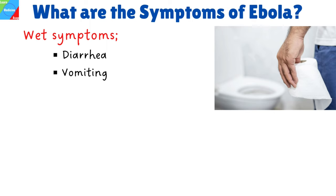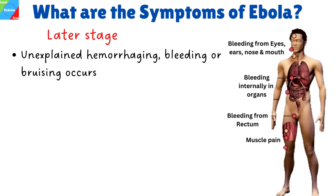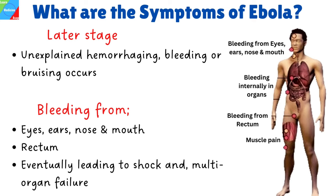This is followed by wet symptoms such as diarrhea and vomiting. Other symptoms are loss of appetite, abdominal pains, red eyes, skin rash, hiccups, chest pains, and difficulty breathing and swallowing. At a later stage, unexplained hemorrhaging, bleeding, or bruising occurs. This usually causes bleeding from all body orifices, including bleeding from eyes, ears, nose, and mouth, bleeding from the rectum, and eventually leading to shock and multi-organ failure.